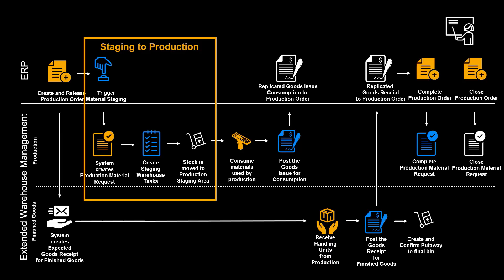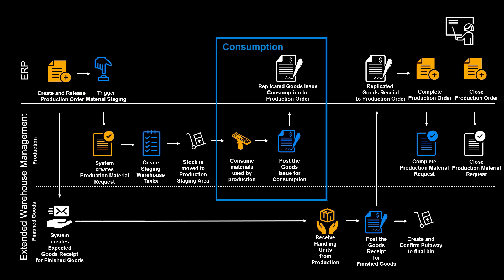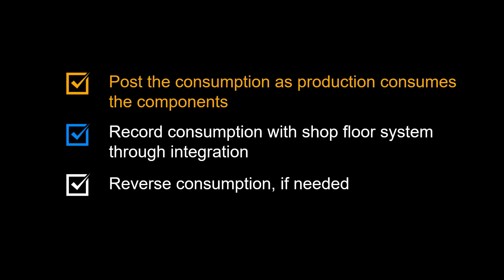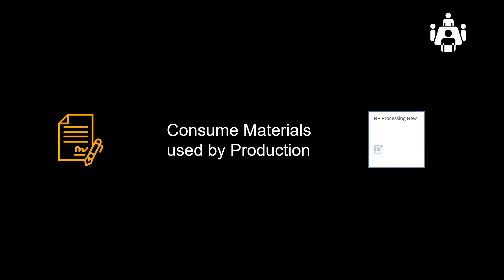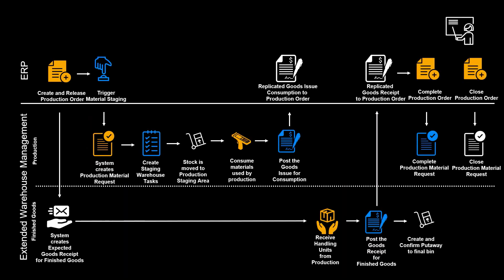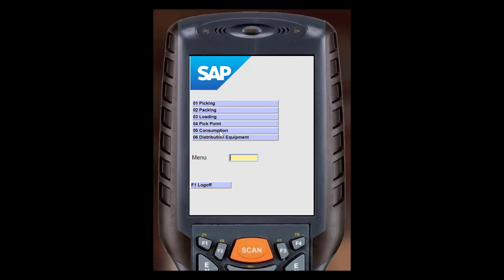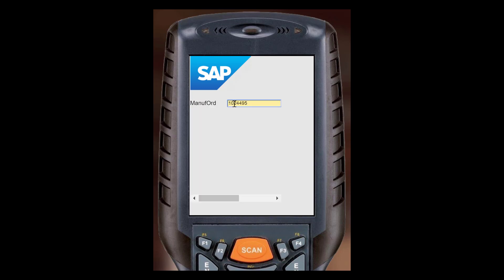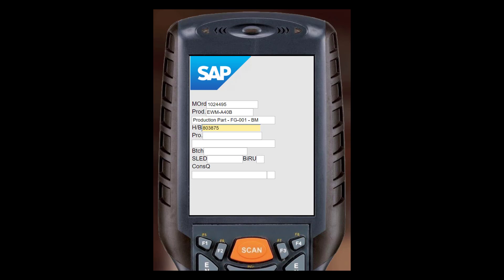Staging to production is now complete, and we are ready to move to the next stage: consumption during production. During this stage, you can post the consumption as the production consumes the components. Record consumption with a shop floor system through integration with, for instance, SAP Manufacturing Execution. You can also, if needed, reverse consumption. Let us show how we can use the handheld RF device to record consumption directly in EWM. We select Outbound, then Consumption, and specify the correct production order. Since the two components are batch controlled, we need to validate the batch and other required information before consumption is registered.